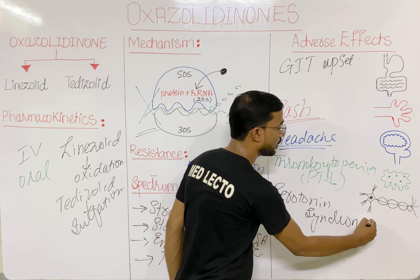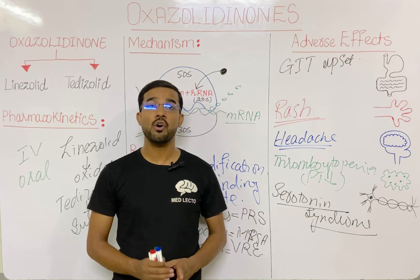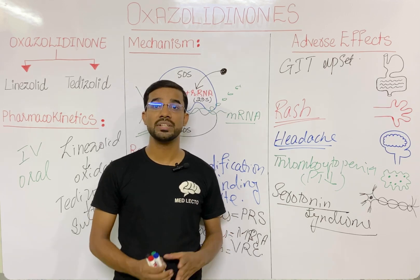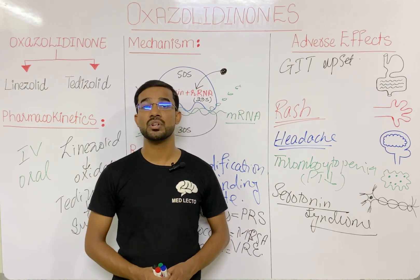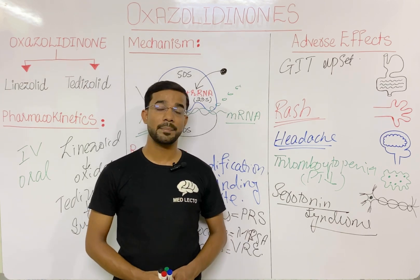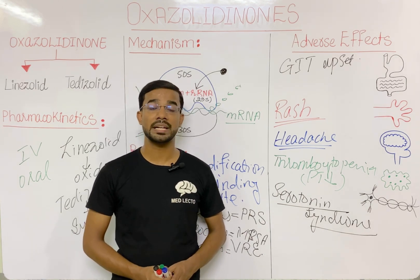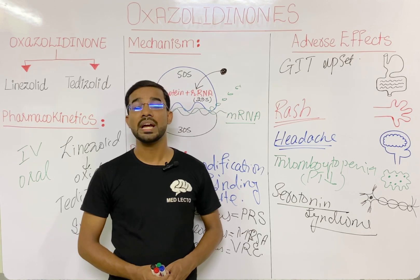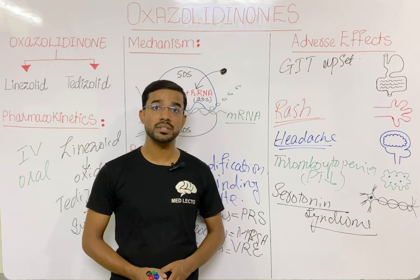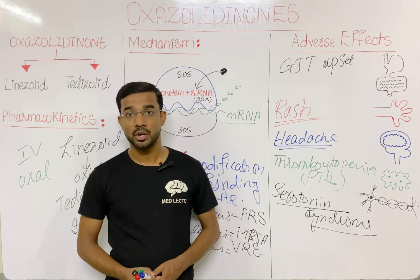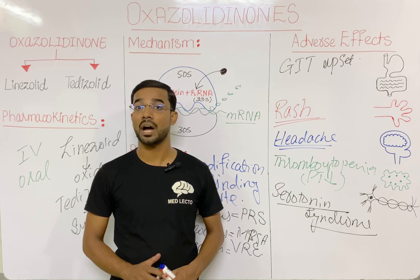The last and most important adverse effect is serotonin syndrome. This occurs if the patient is taking oxazolidinones along with other drugs like selective serotonin reuptake inhibitors (SSRIs), monoamine oxidase inhibitors (MAOIs), or foods that contain a high amount of tyramine such as cheese, hot dogs, and fava beans.